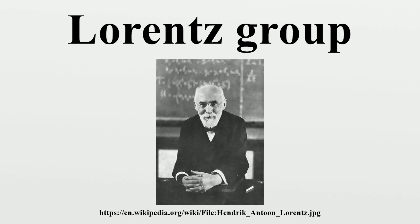The identity component of the Lorentz group is itself a group and is often called the restricted Lorentz group, denoted SO+. The restricted Lorentz group consists of those Lorentz transformations that preserve the orientation of space and direction of time. It has often been presented through a facility of quaternion algebra, and it arises in other ways in pure mathematics — for example, as the point symmetry group of a certain ordinary differential equation, a fact that also has physical significance.